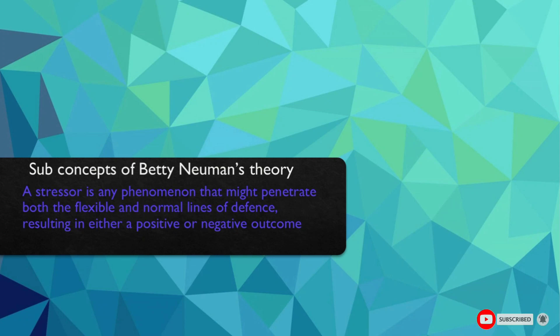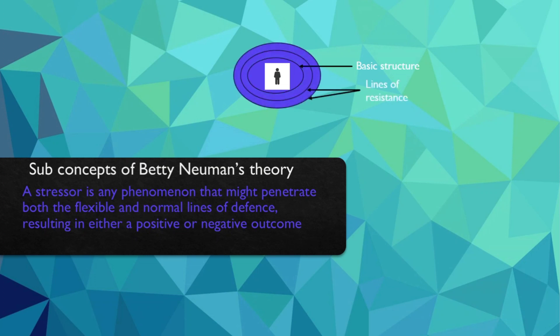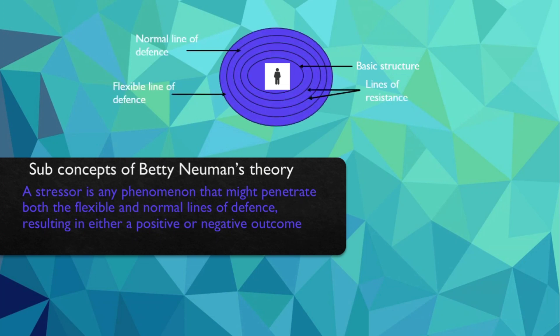We were very often talking about stressors. So, what is a stressor? A stressor is any phenomenon that might penetrate both the flexible and normal line of defense, resulting in either a positive or negative outcome. We have a basic structure which is protected by the lines of resistance, normal line of defense, and flexible line of defense, and this is an open system. Anything which comes and breaks these lines of protection or lines of resistance will be called as a stressor. It can have positive as well as negative outcomes, depending on the perception of a person.